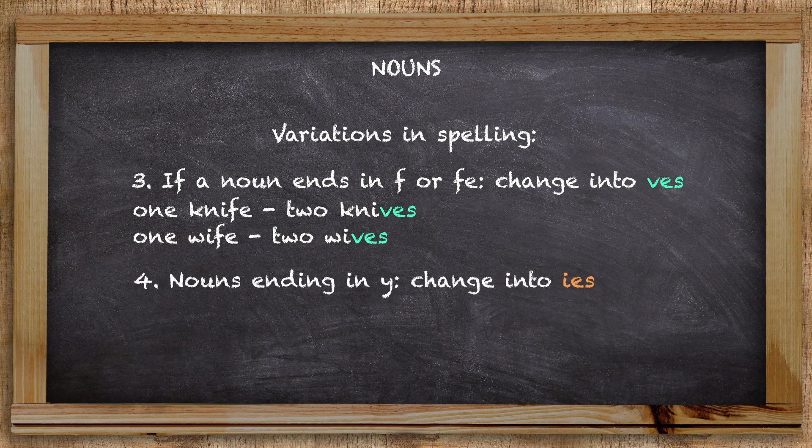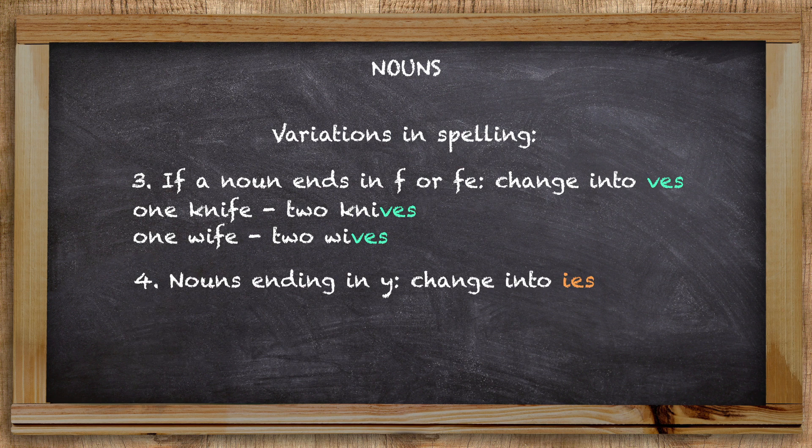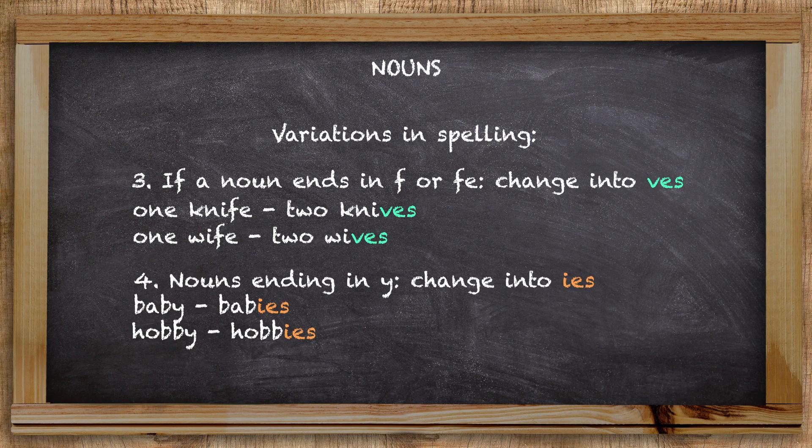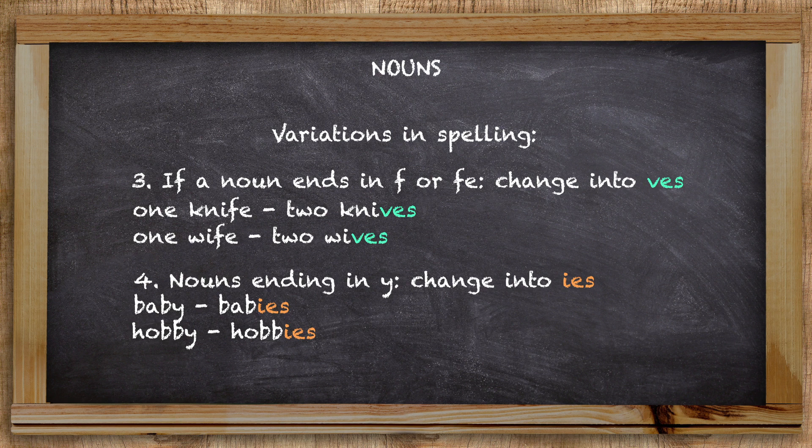If you need to make a noun ending in a y plural, the y changes into ies. Baby becomes babies and hobby becomes hobbies, both with ies. Note that this is different than in Dutch, where we would use an apostrophe. This is not the case in English, another commonly made mistake.